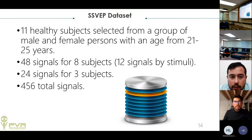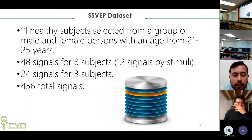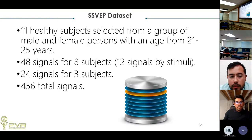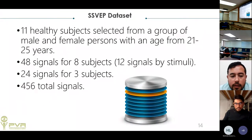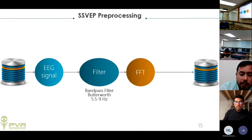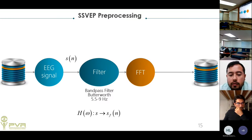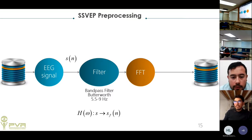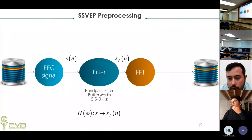For the SSVEP dataset, 11 healthy subjects were used: 8 for training and 3 for validation, creating 24 validation signals. The dataset is composed of four frequency classes. Pre-processing uses a bandpass filter from 5.5 to 9 Hz — the range of the stimulus frequencies — and FFT is applied to convert signals from time domain to frequency domain.